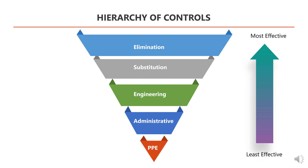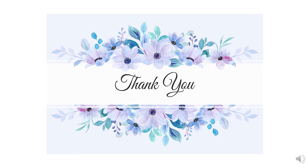The Hierarchy of Control is an important tool for identifying and implementing the most effective ways to control hazards in the workplace. By starting at the top of the hierarchy and working your way down, you can ensure that the most effective control methods are being used to protect workers from harm. Remember, always start at the top and work your way down to ensure the safety of your workers. Thanks for watching. Stay safe at work.